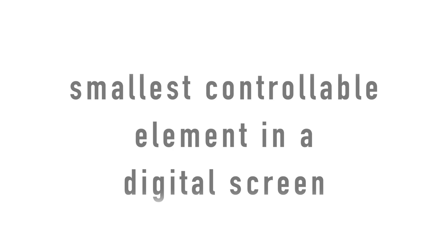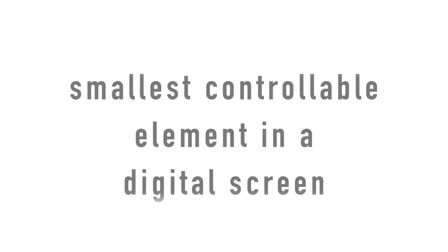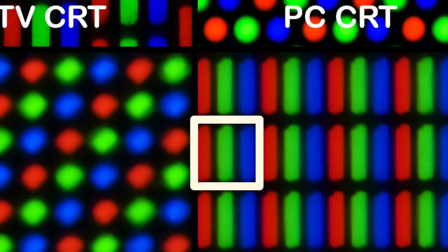By definition, it's the smallest controllable unit on a screen. Each pixel has three subpixels in it, and each subpixel only shows one color at different shades. All digital screens work on the same principle — the principle of having these really small dots. How they produce these dots is the technology of the screen. Different technologies have different ways of producing it, but the principle remains the same — there are these really small dots.